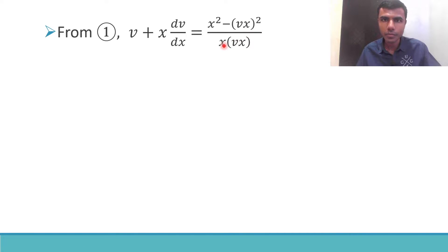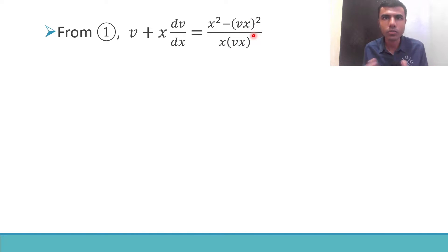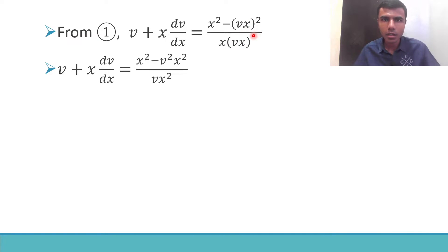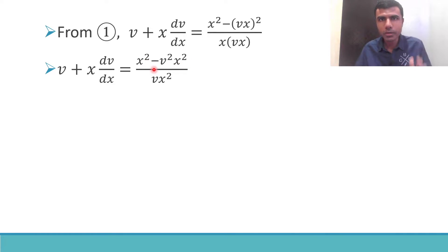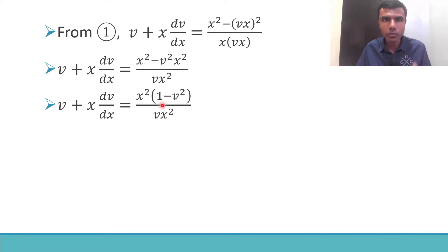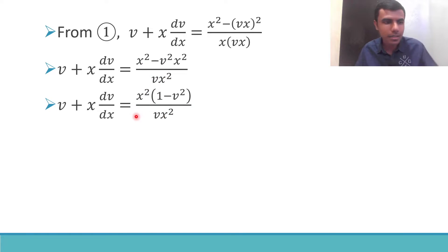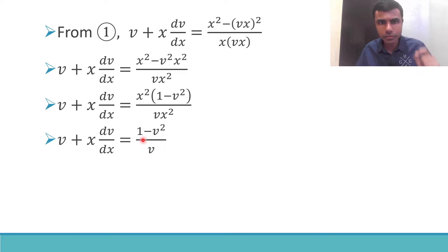x times vx is nothing but vx², and (vx)² is nothing but v²x². In the numerator I can take x² common, since I have x² minus v²x². Taking x² common gives x² times (1 minus v²). This x² and the x² in the denominator cancel.